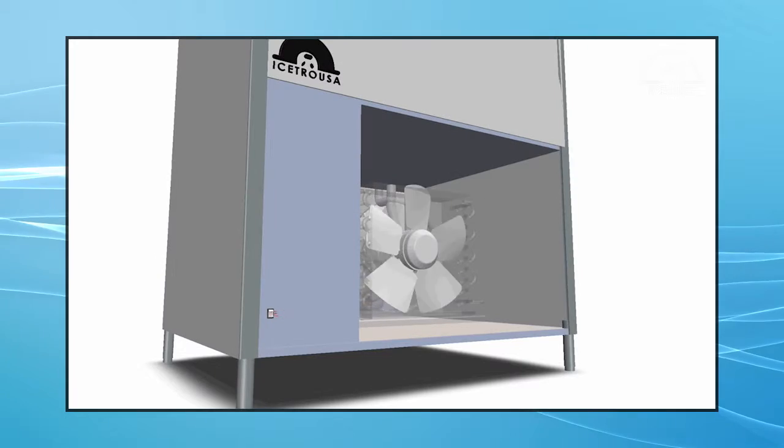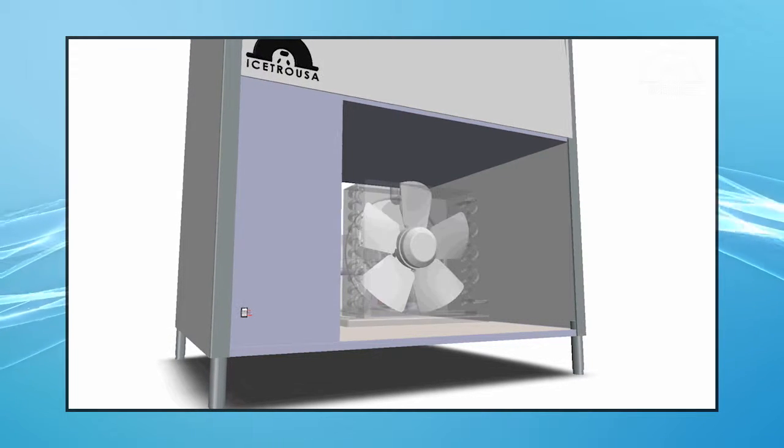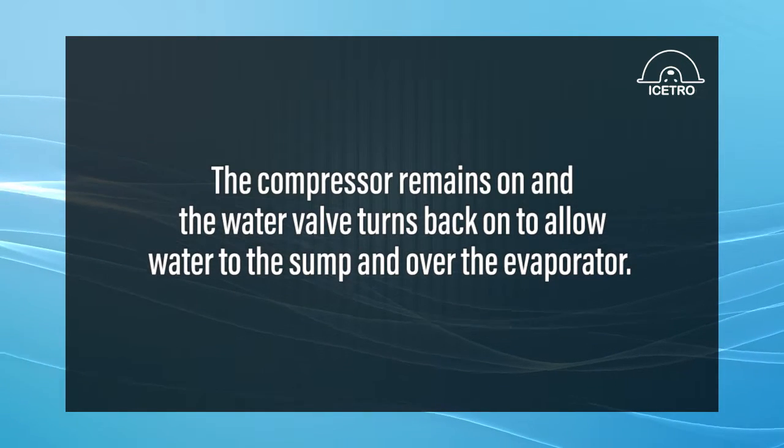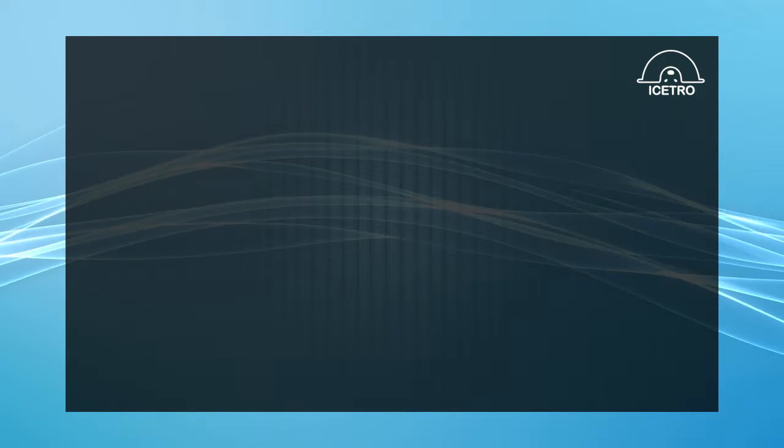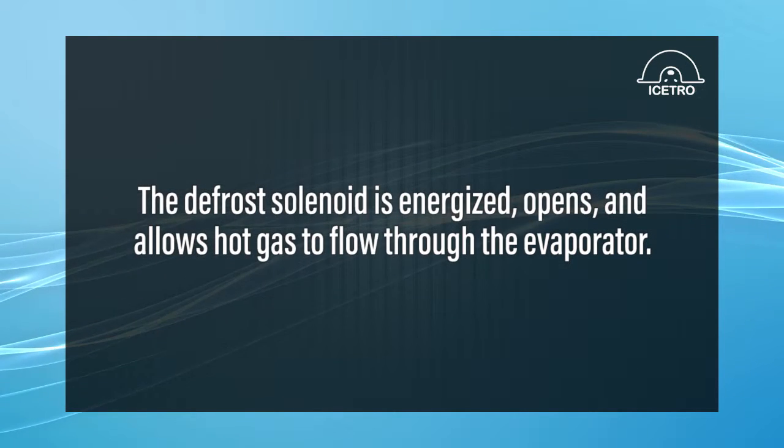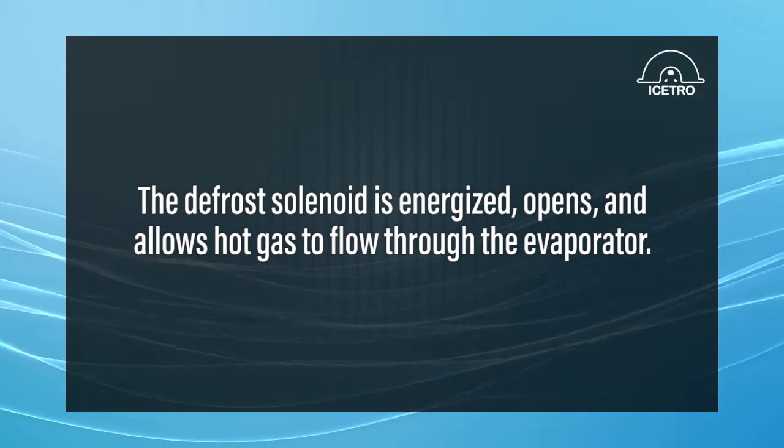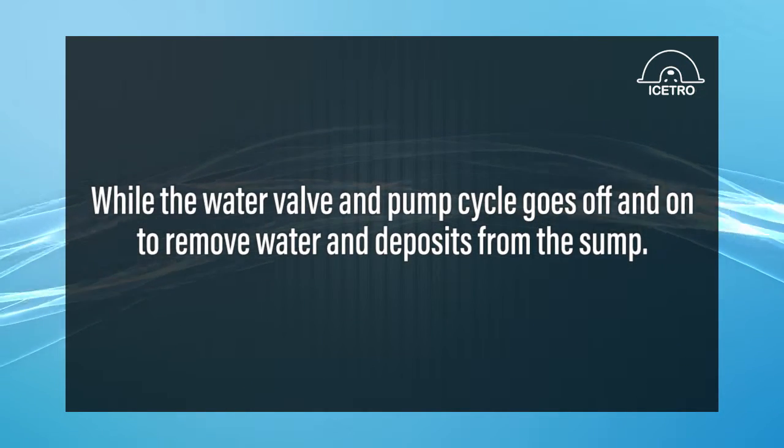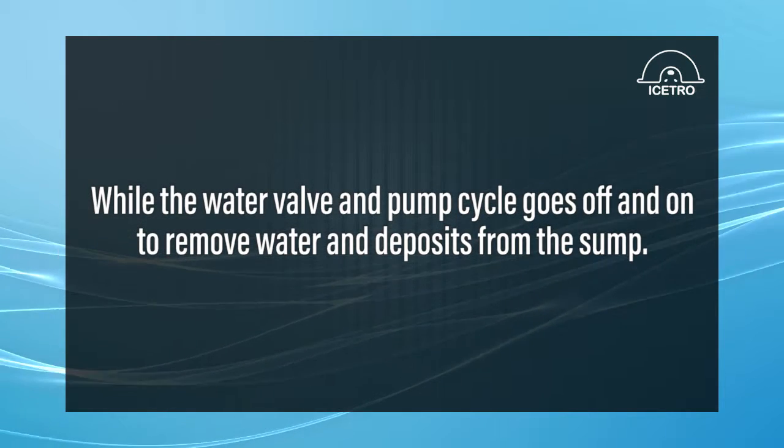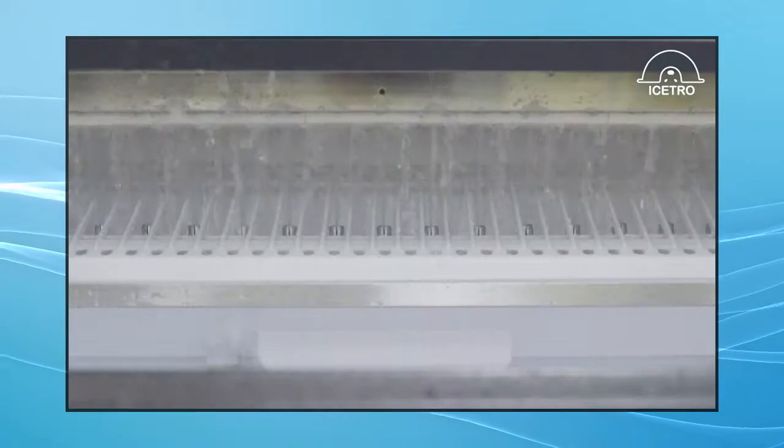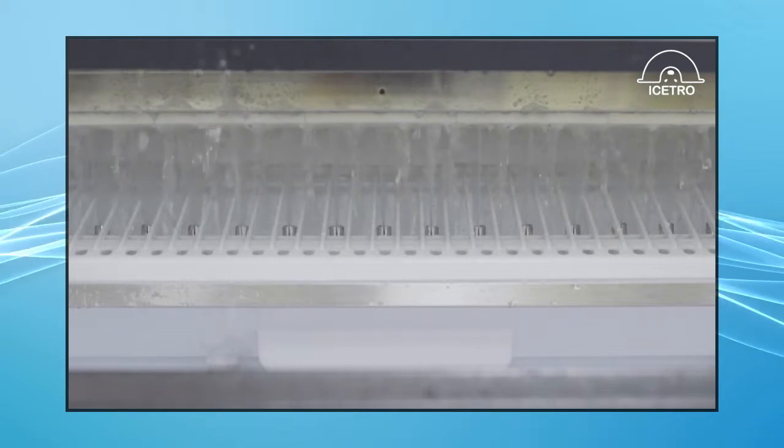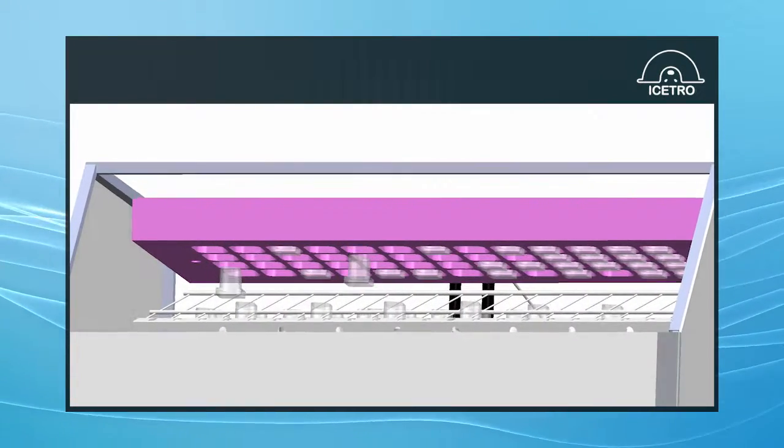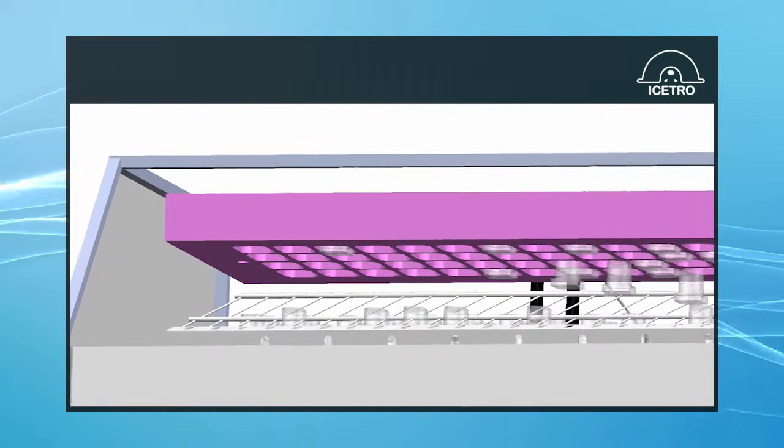After the set time delay has been achieved, the condenser fan motor shuts down. The compressor remains on and the water valve turns back on to allow water to the sump and over the evaporator. And the defrost solenoid is energized and opens and allows hot gas to flow through the evaporator. And while the water valve and pump cycle goes off and on to remove water and deposits from the sump. After a minute and a half, the water pump shuts down. While the water valve remains energized for an additional 50 seconds to fill the sump while hot gas continues to warm the evaporator.